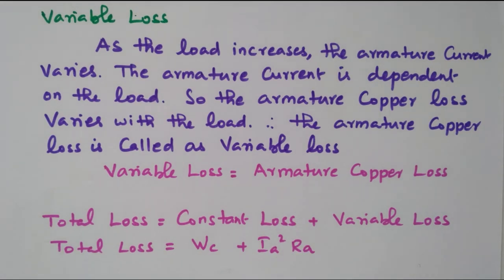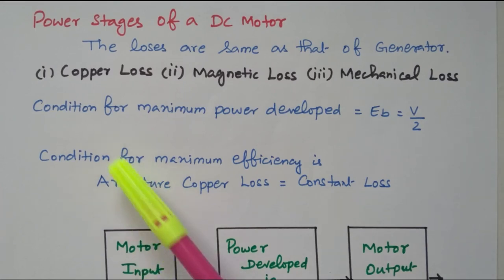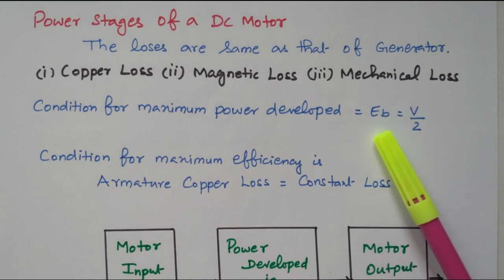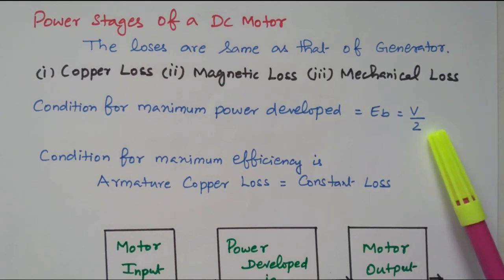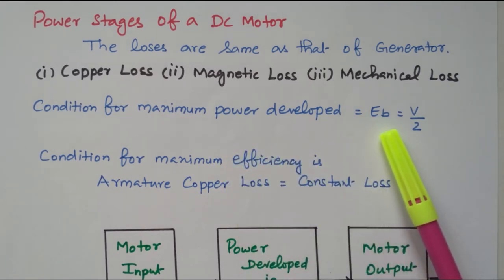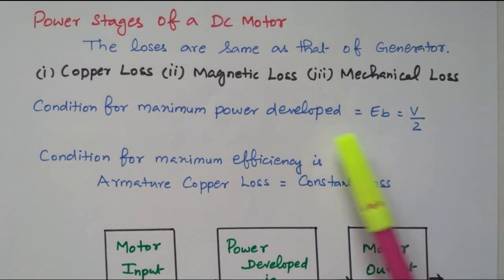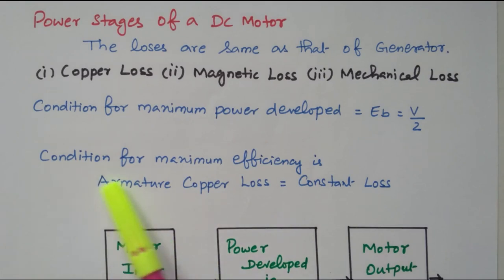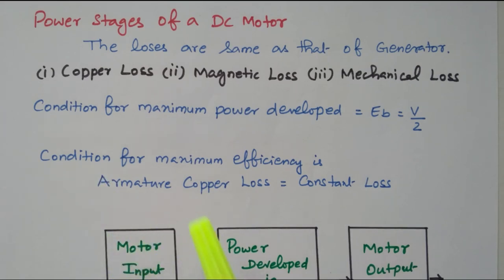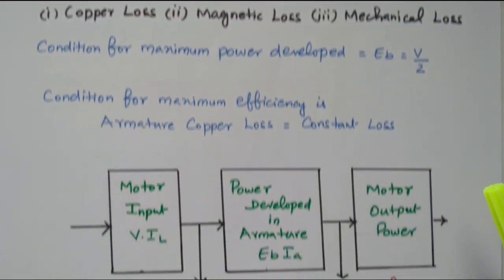Now we will go to the power stage. One condition is given: the condition for maximum power developed is back EMF equal to V divided by 2 — applied voltage divided by 2. That will give the maximum power developed. The back EMF created in the motor should be equal to half of the applied voltage to get maximum power developed. Similarly, the condition for maximum efficiency is armature copper loss equal to constant loss — that is, variable loss equal to constant loss. If both are equal, we will get maximum efficiency.